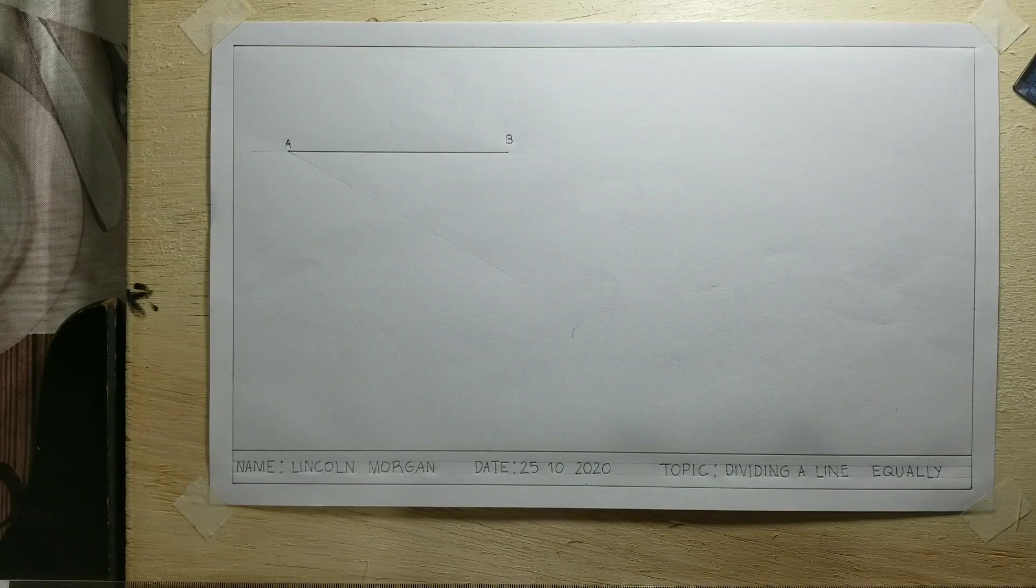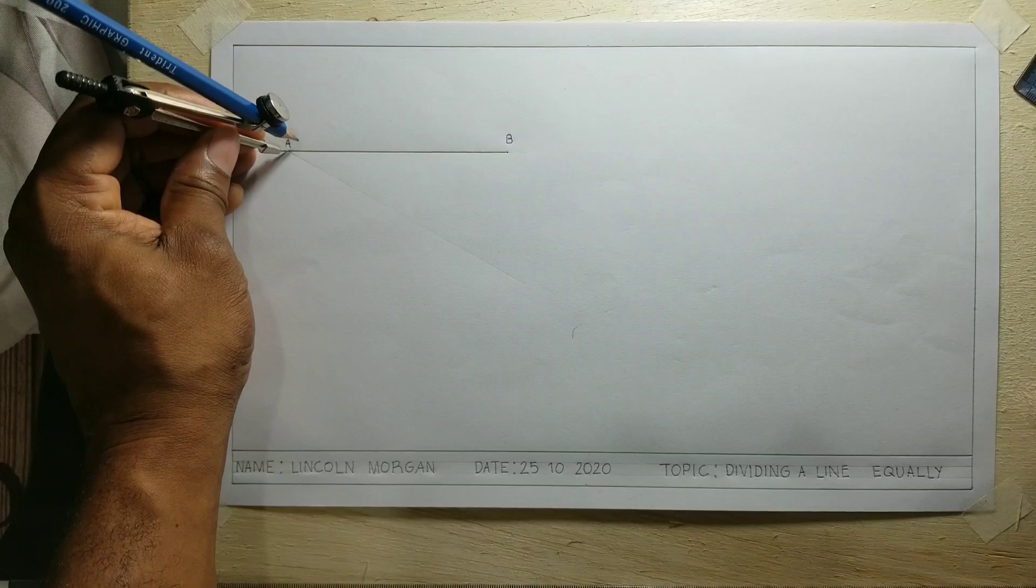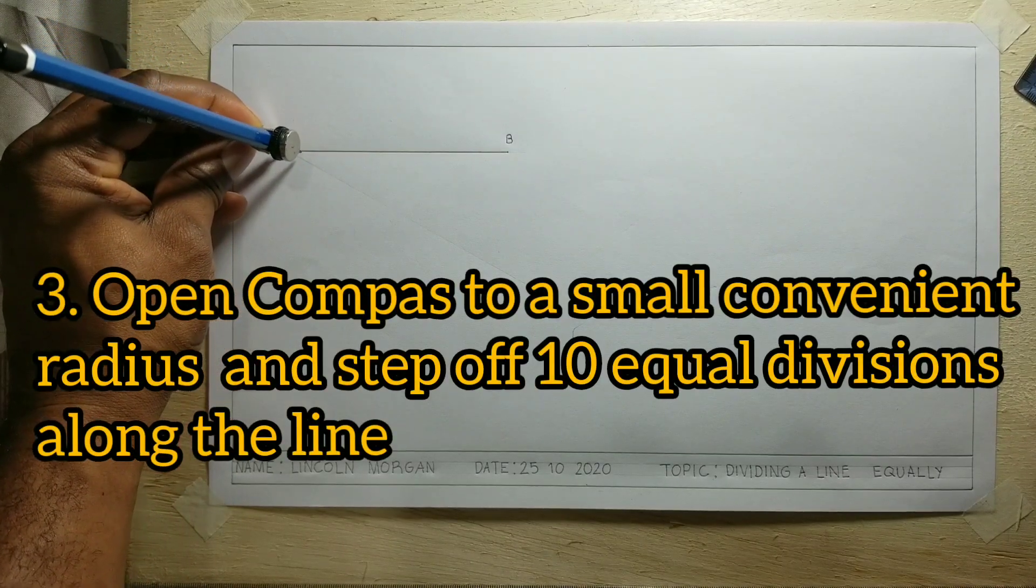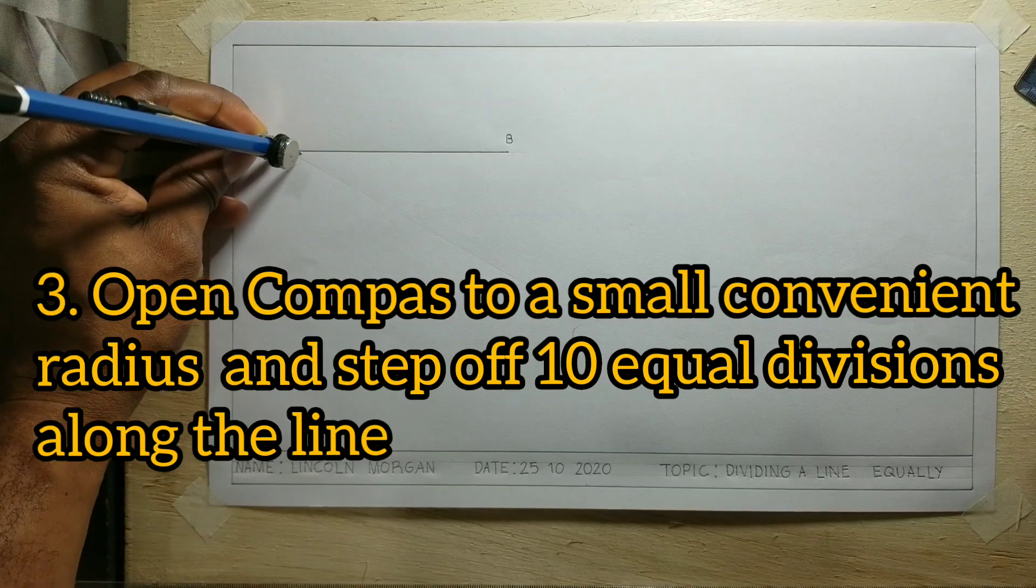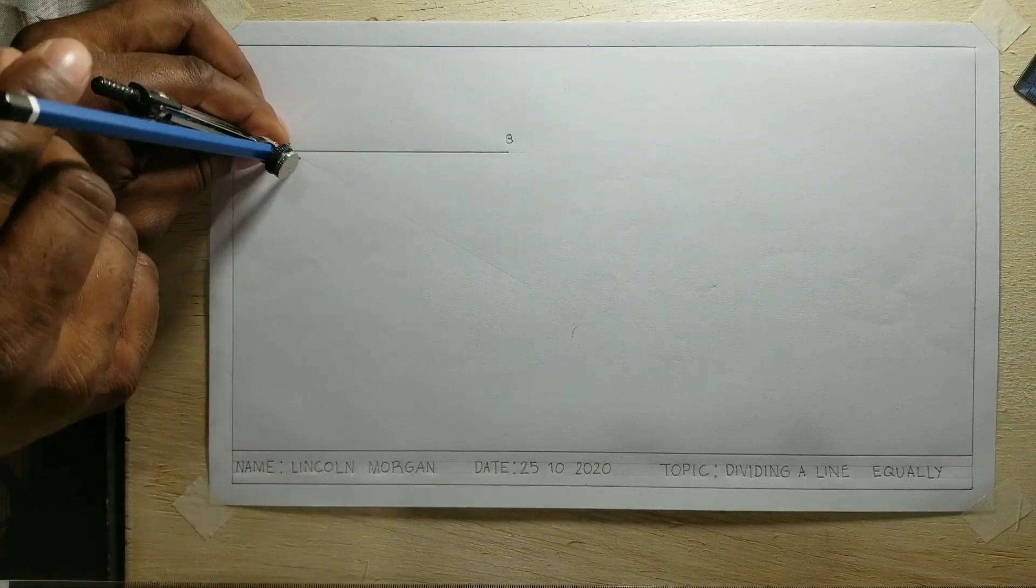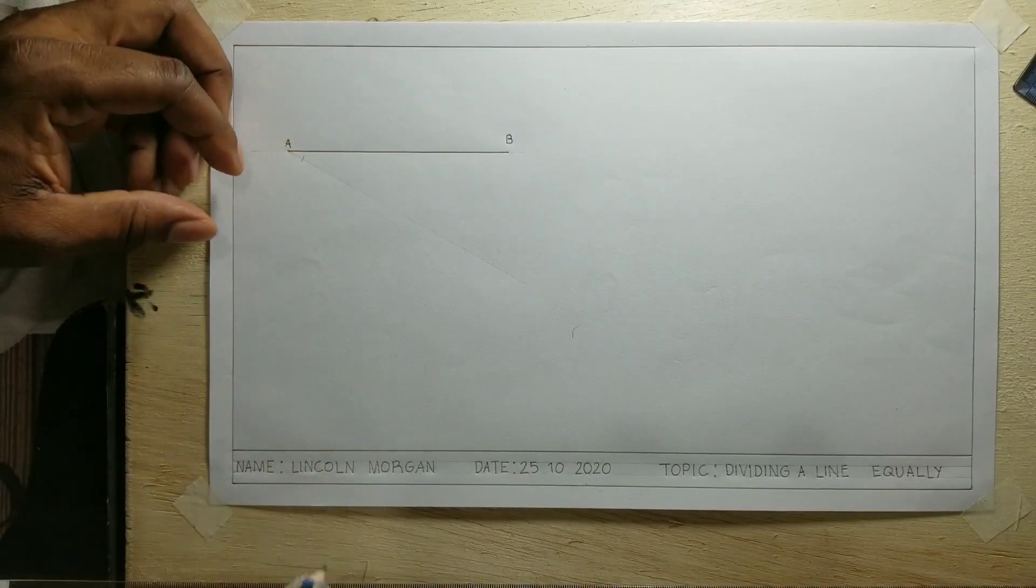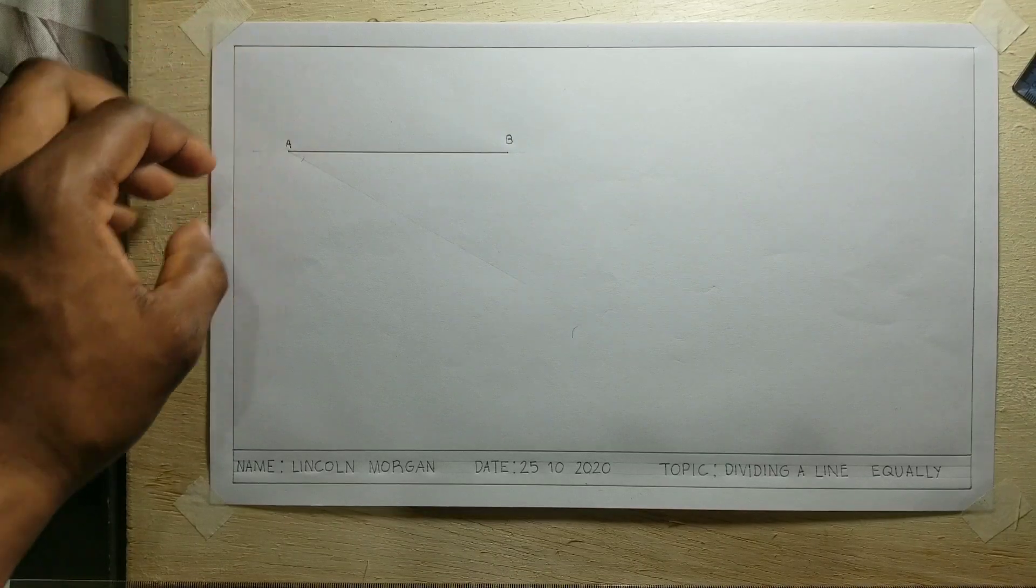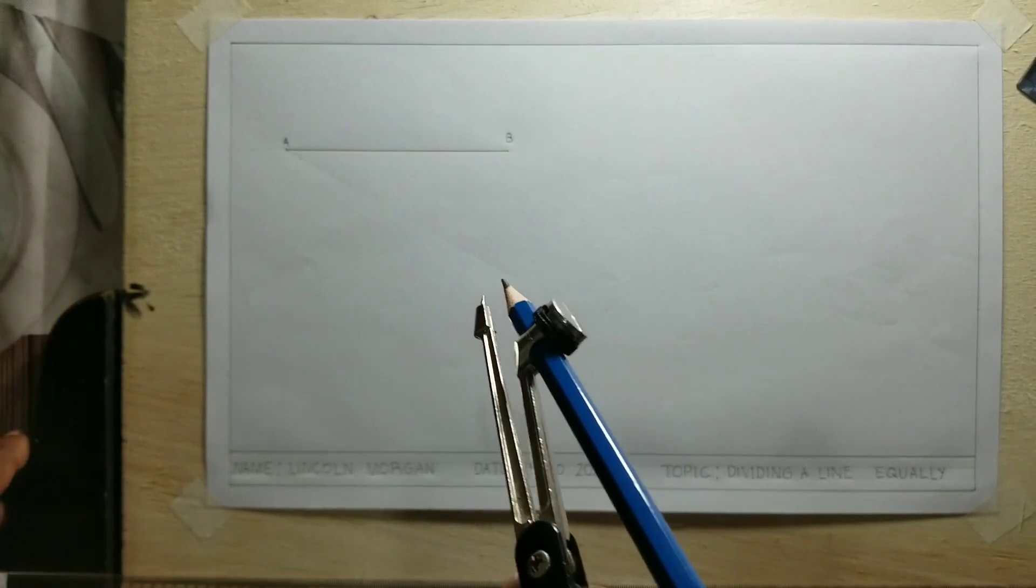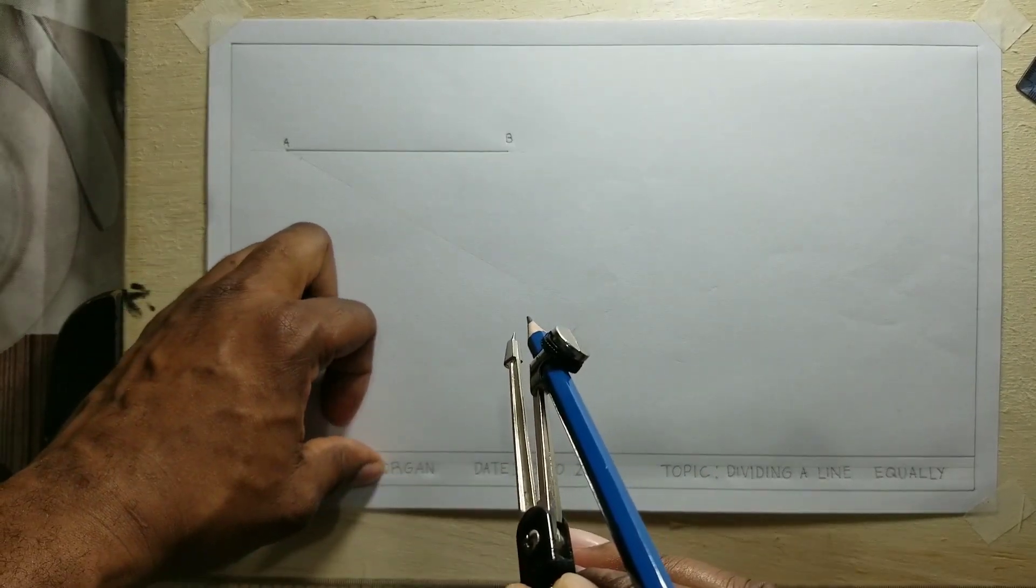So what I'm now going to do is put my compass point at A and I'm going to be marking off some arcs on this line that I drew. Now from this first arc that I just drew, I'll now put my compass point at this arc and make another mark on the line.